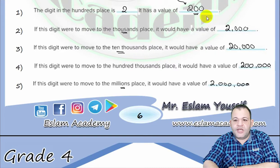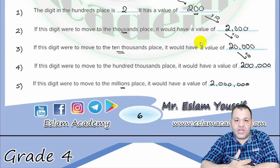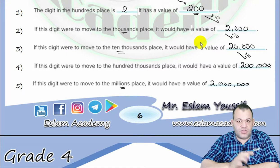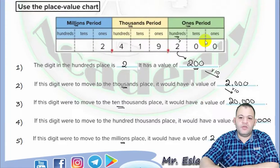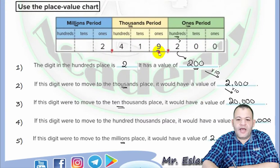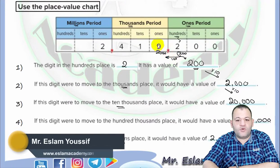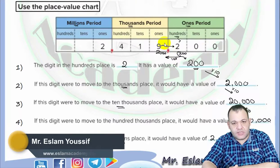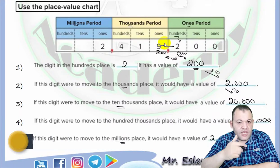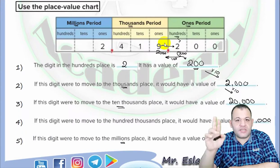You will find that each time we move left, we multiply by ten. Moving to the left makes the number ten times more, and moving to the right makes the number ten times less. For example, two in the thousands place is two thousand, but two in the hundreds place is two hundred — moving right means ten times less. Moving left means ten times more.